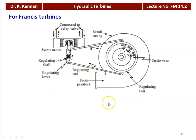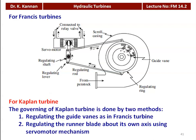In the case of the Francis turbine, the entire governing mechanism is connected to the servo motor, which regulates the guide vanes of the runner. The position of the guide vanes is changed by means of the servo motor via a regulating lever and regulating shaft, so that the amount of water admitted to the turbine is regulated according to the load. For the Kaplan turbine, there are two methods of governing: regulating the guide vanes as in the Francis turbine, and regulating the runner blade about its own axis using the servo motor mechanism. The governing mechanism is inbuilt with the turbine for regulating the power produced.